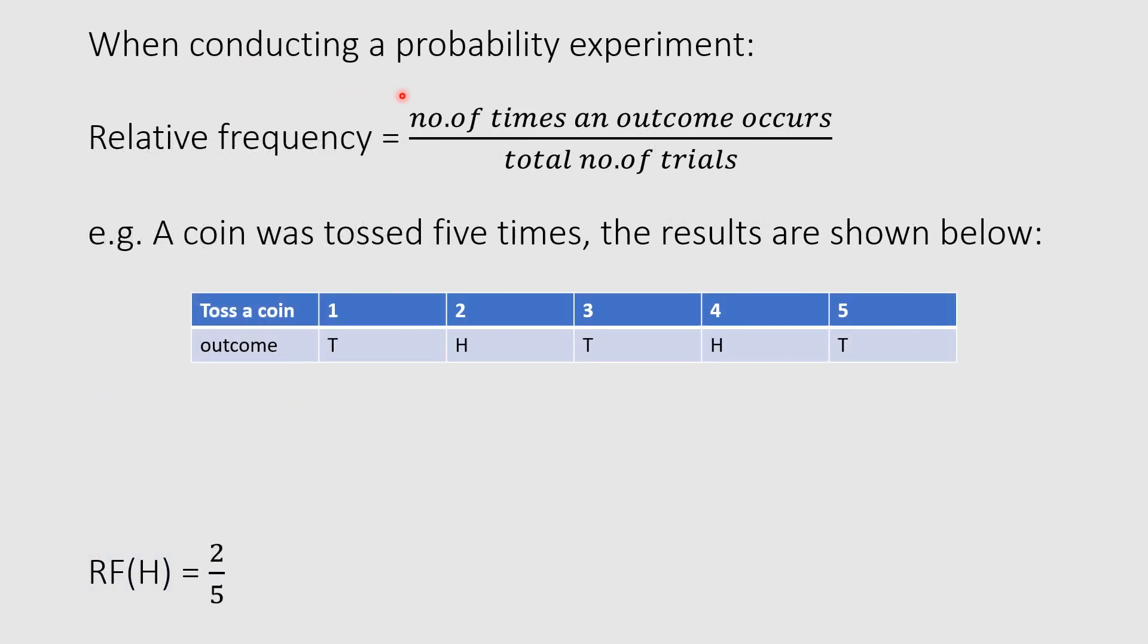When conducting a probability experiment, we now have the concept of relative frequency. So our formula: relative frequency equals number of times an outcome occurs divided by number of trials.